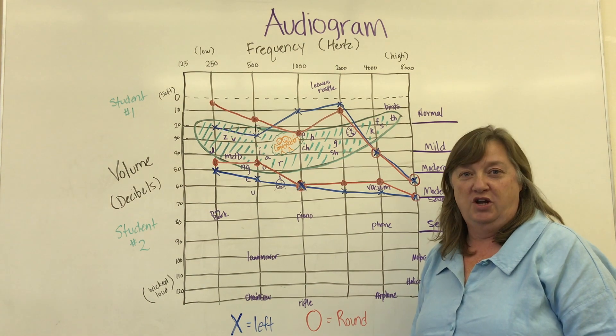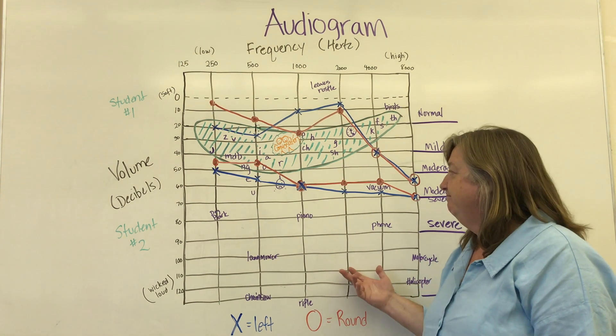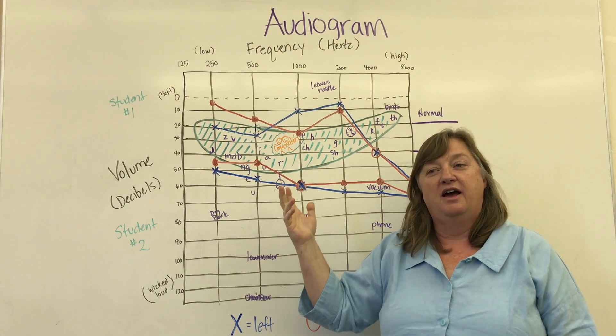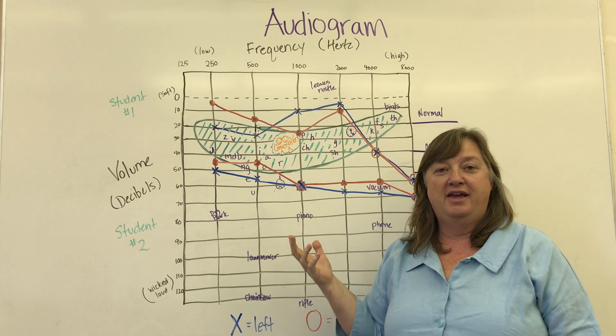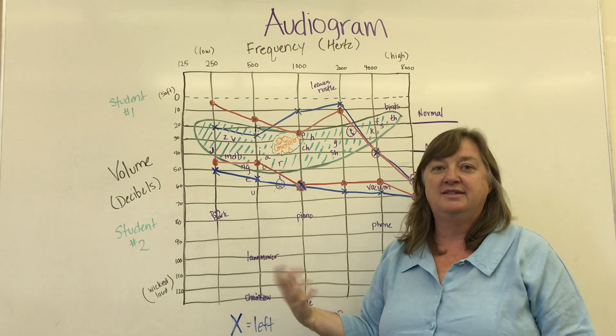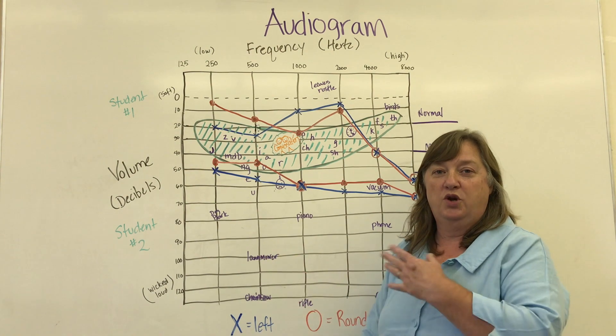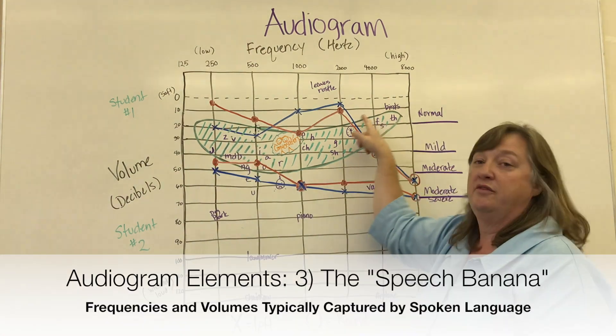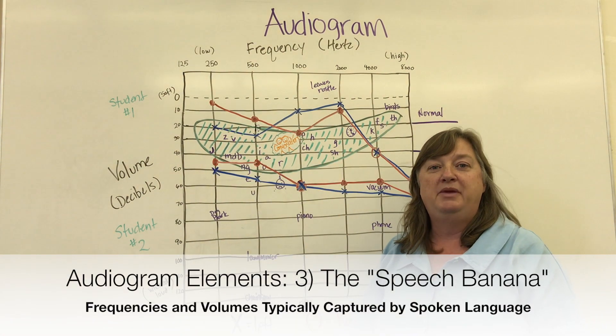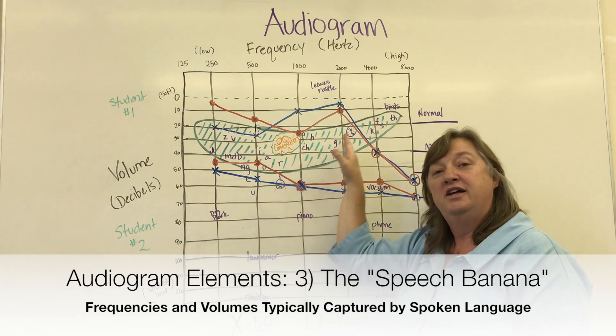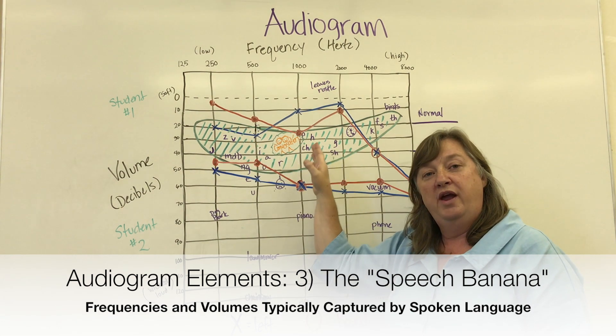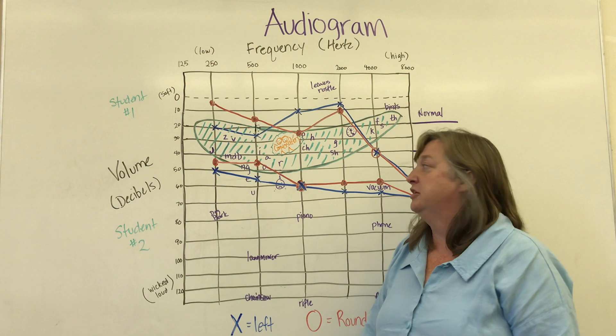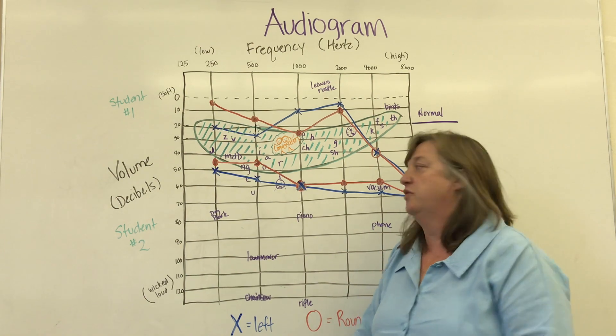Some things to know about an audiogram: the frequency of sounds that are made by the letters and blends of our language is recorded on this audiogram. There is this green area here, often referred to as a speech banana, meaning that this is the area frequency and volume-wise where language is captured.